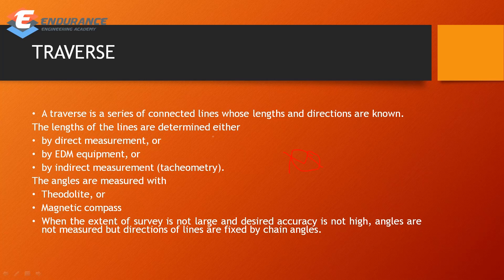Traverse is a series of connected lines whose lengths and directions are known. The length of the line is determined by one of several methods: you can measure the length directly, or use EDM (Electronic Distance Measurement) equipment, or Tachymetry.